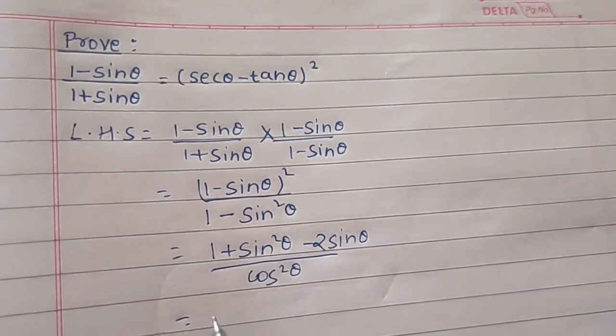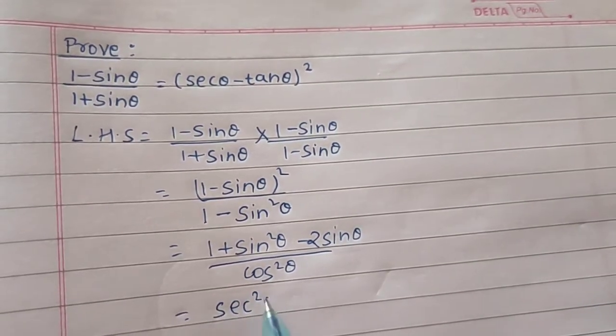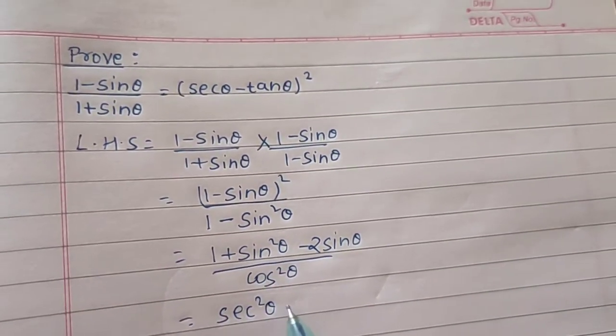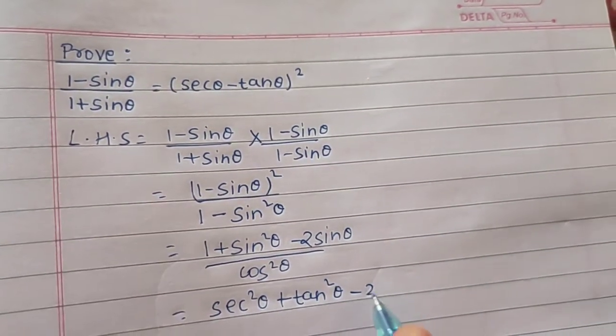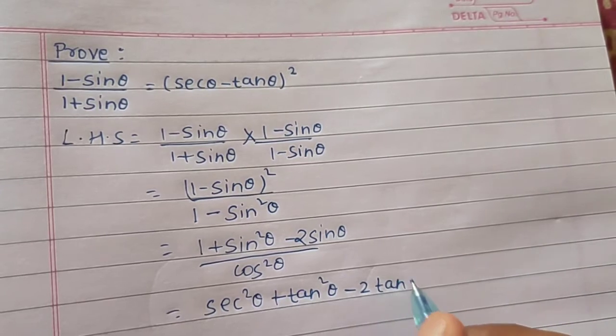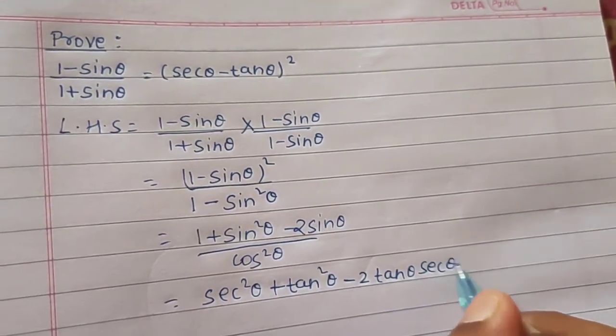Now, 1 divided by cos square theta is secant square theta. Sin square divided by cos square theta is tan square theta minus sin by cos is tan and 1 by cos is secant.